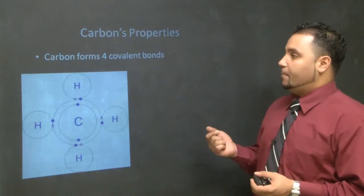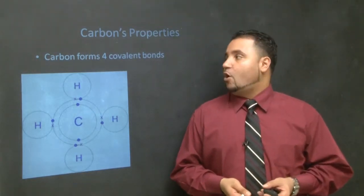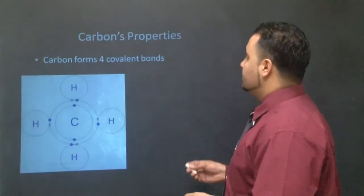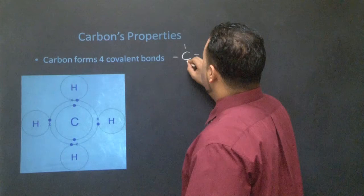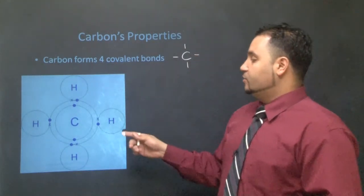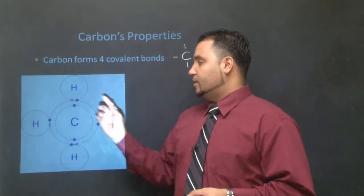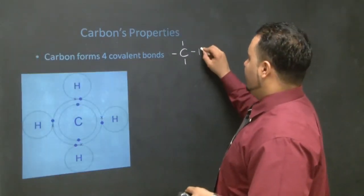So first thing, carbon's properties. There are three major properties we have to make sure we know. First one is carbon forms four covalent bonds. Carbon has four valence electrons in its outer shell, so it wants to bond four times, like it's doing here in methane. That would be one example, a methane molecule.